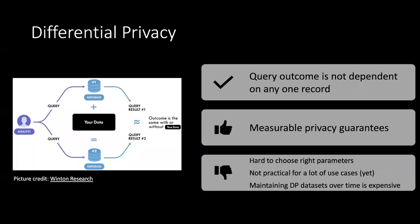Lastly, differential privacy is the state-of-the-art when it comes to providing anonymization guarantees. This technology gives you measurable, mathematically proven privacy guarantees. The fundamental principle is simple: a single record should not impact the outcome of a query. Differential privacy ensures records are hiding within the entire data set and no one record stands out. Downsides include that it's hard to choose the right parameters and requires a lot of experimentation. It's also not yet practical for many use cases as it takes a lot of time to get right, and maintaining differential-private data sets at scale can be expensive.